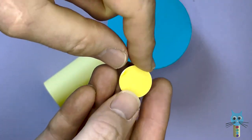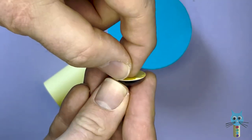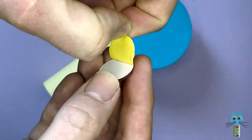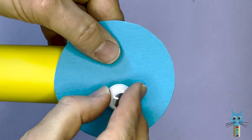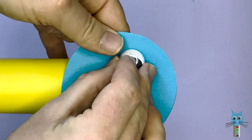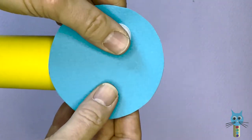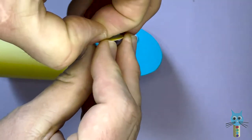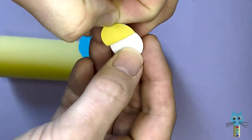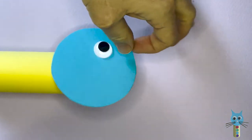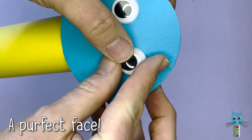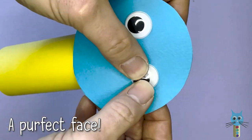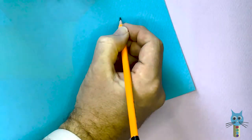Now taking two googly eyes, and these ones have got a sticky back, so take the peeling off. Use some double-sided sticky tape if it doesn't have that. And then just stick it onto the blue circle, which is the face, and put them in an even location so that the face is going to look nice and natural. So put my second eye on here, and now I've got my two eyes for this lovely face.